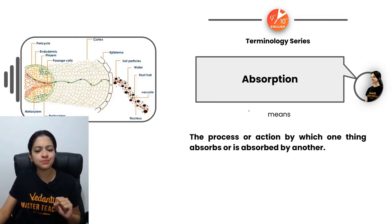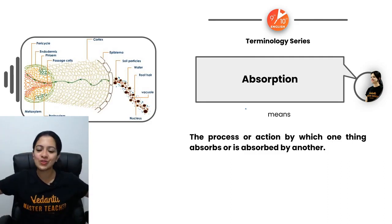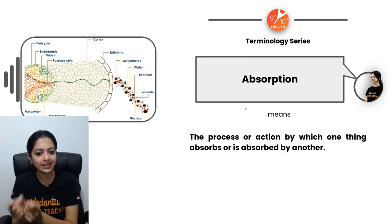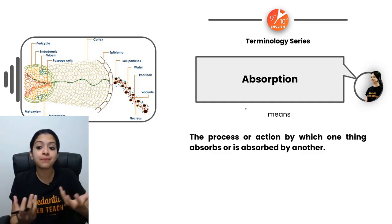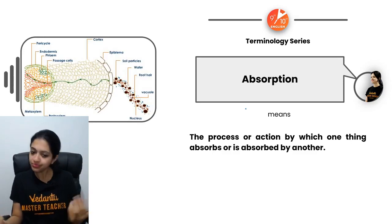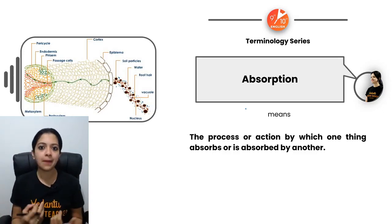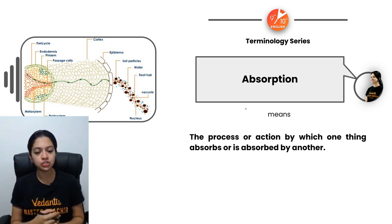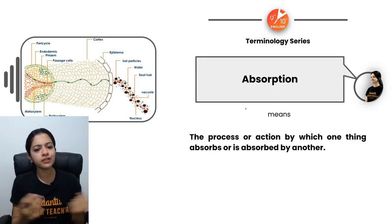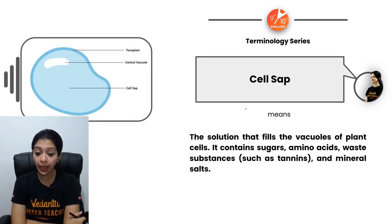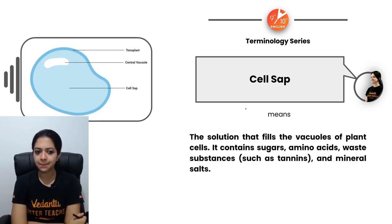Next, absorption — the process by which one thing absorbs or is absorbed by another. In plants and living systems, absorption is very important. Water absorption, nutrient absorption — all of this happens in plant bodies. Cell sap is simply the solution that fills the vacuoles of plant cells. Vacuoles inside plant cells are really large compared to animal cells because they store a lot of cell sap.